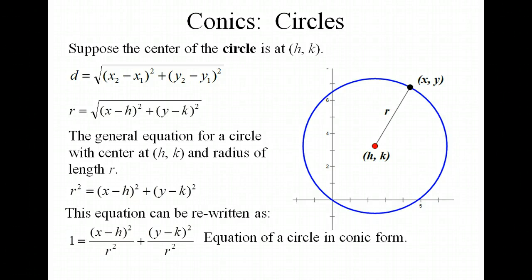Now what I like to do is to set this equal to 1 and put it in what I call a conic form. So we're dividing both the x values and the y values by r².